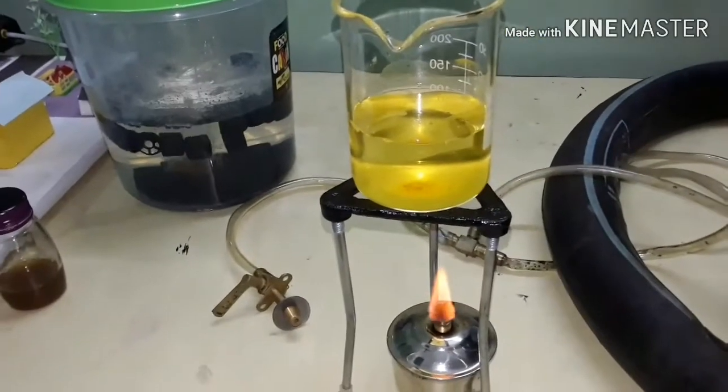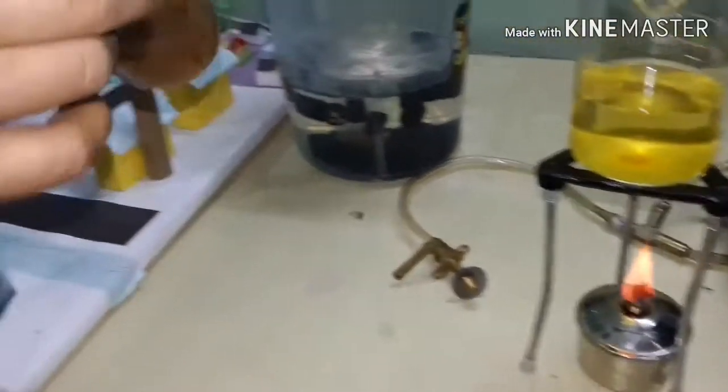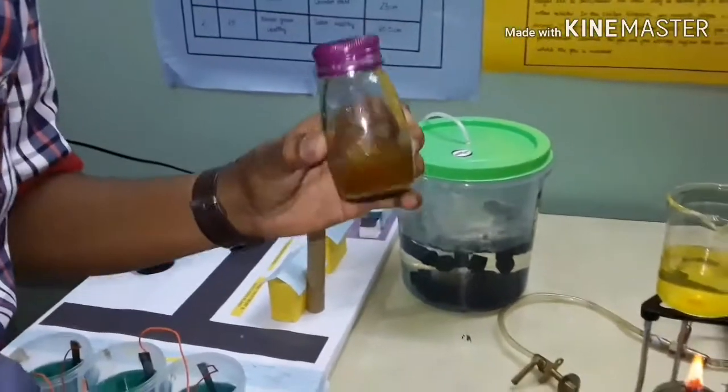After the concentration process, we will get the concentrated form of the urine that is NPK: nitrogen, phosphorus and potassium.